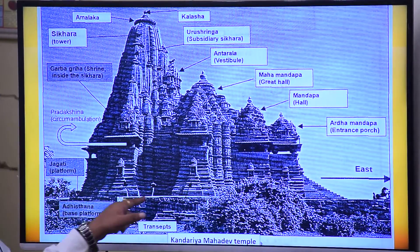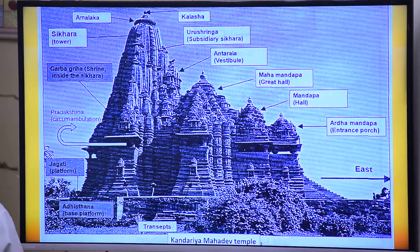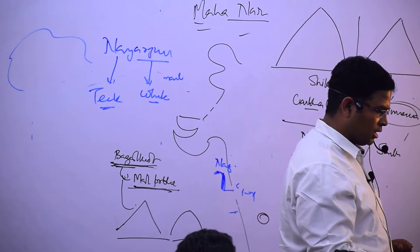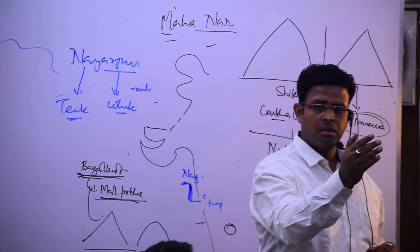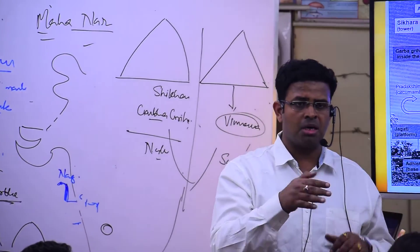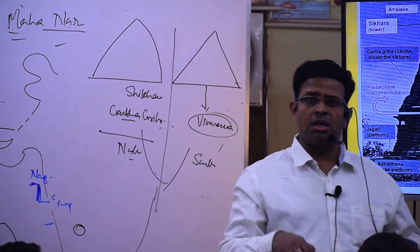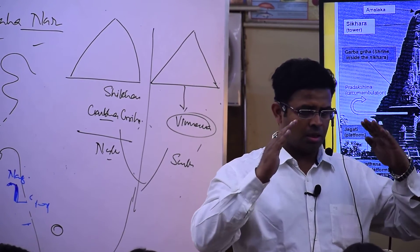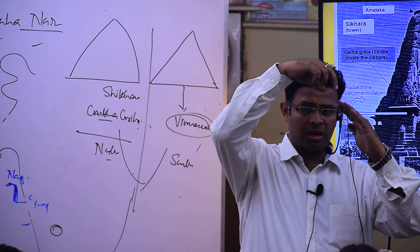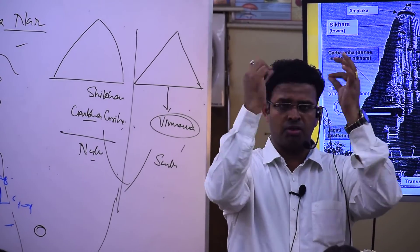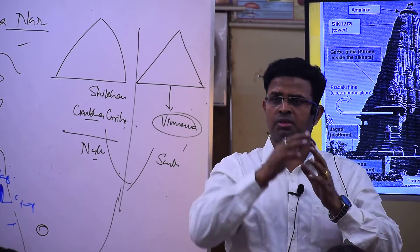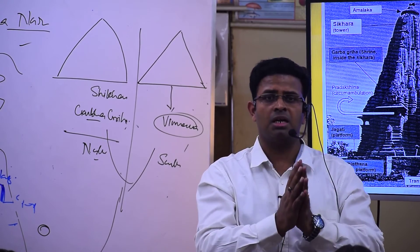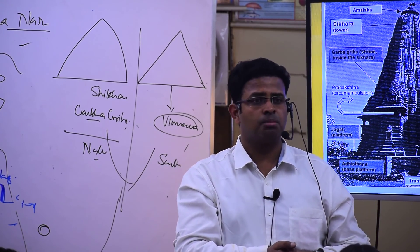Outside the temple, one performs Pradakshina. To summarize the Nagara style: Jagati, Ardha Mandapa, Mandapa, Maha Mandapa, Antarala, Garbhagriha, Shikhara, Amalaka, Chandrika — a series of small disks — and above that the Kalasha, which can be made of other fruits and is known as Bija Pushpa.